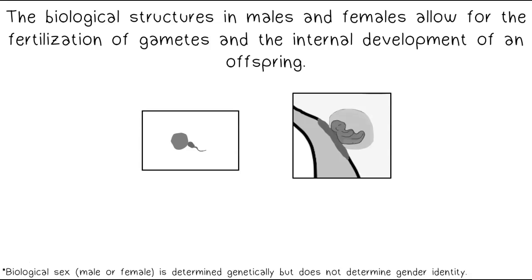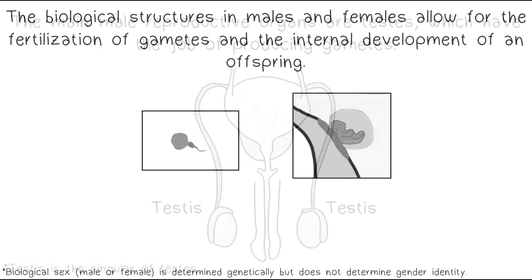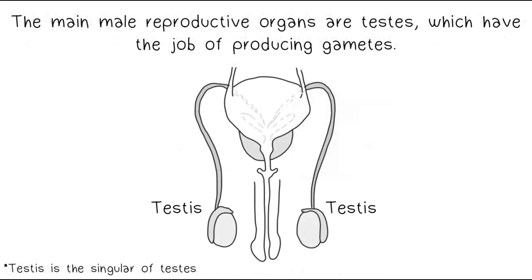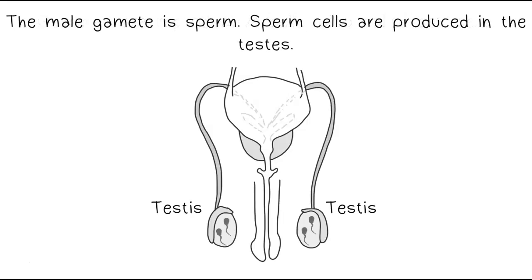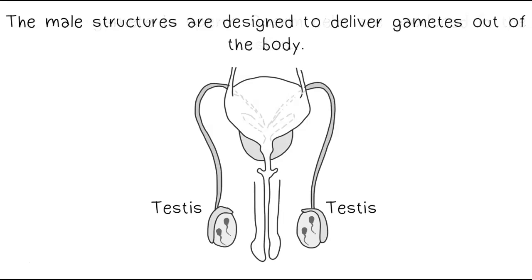The main male reproductive organs are the testes, which have the job of producing gametes. Gametes are reproductive cells, also called sex cells. The male gamete is sperm. Sperm cells are produced in the testes, and the male structures are designed to deliver gametes out of the body.